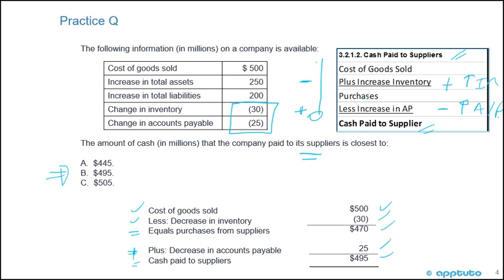My advice is to write out the formula the way that you know it, then check the data they're giving you. In this case, you're reversing both signs. In some cases, you might just be reversing one sign. So look — normally this is an increase, they gave me a decrease, I've got to change the sign. That's the last slide for this LOS.